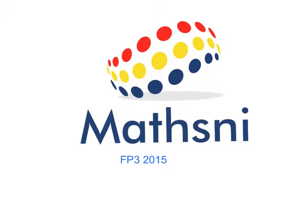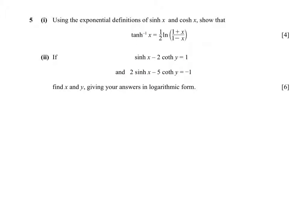FP3 2015. So we start with cosh x, which is 1 half e to the x plus e to the minus x, and sinh x, which is 1 half e to the x minus e to the minus x.